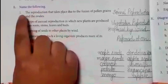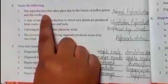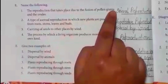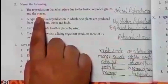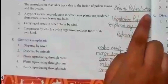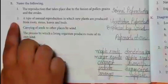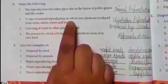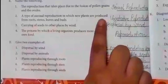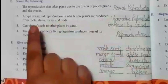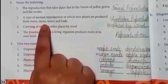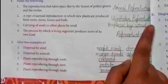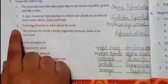E. Name the following. First: the reproduction that takes place due to the fusion of pollen grains and the ovules is called sexual reproduction. Second: a type of asexual reproduction in which new plants are produced from roots, stems, leaves and buds is vegetative reproduction.